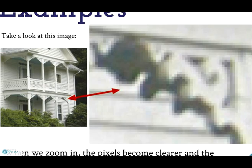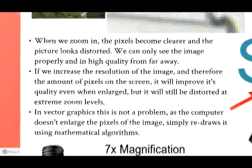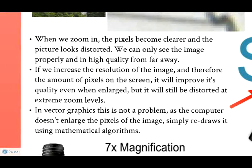Examples. Take a look at this image. When we zoom in, the pixels become clearer and the picture looks distorted. We can only see the image properly and in high quality from far away. If we increase the resolution of the image and therefore the amount of pixels on the screen, it will improve its quality even when enlarged, but it will still be distorted at extreme zoom levels. In vector graphics, this is not a problem as the computer doesn't enlarge the pixels of the image, but simply redraws it using mathematical algorithms.